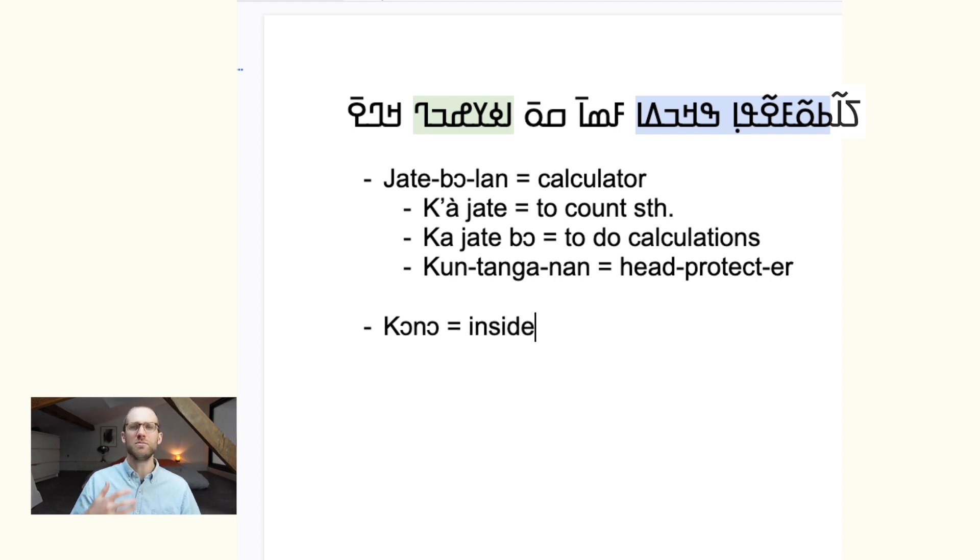And it can also be used to mean your stomach. So you can say, un kono mai, my stomach is not good, meaning not feeling well, or there's a problem with my stomach. Or you can say, un beso kono, I'm in the house, right, or un bebon kono, I'm in the house or the room.